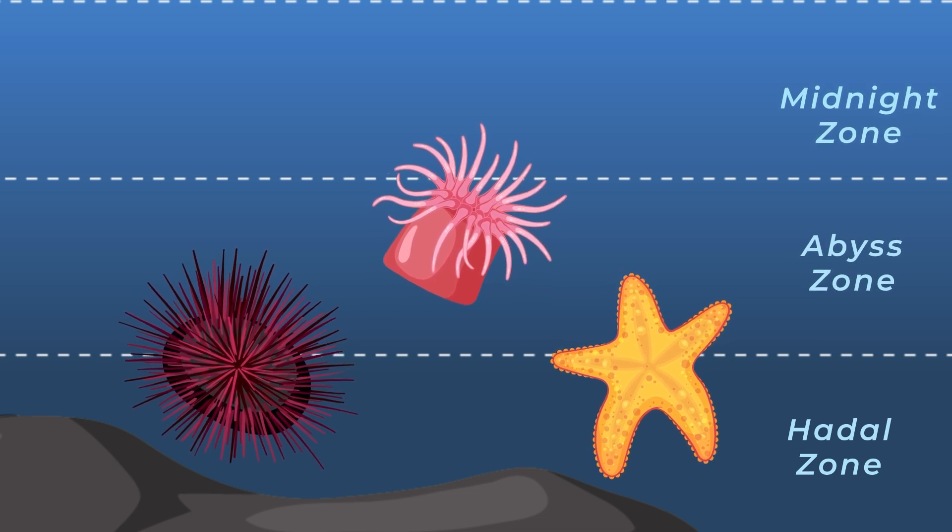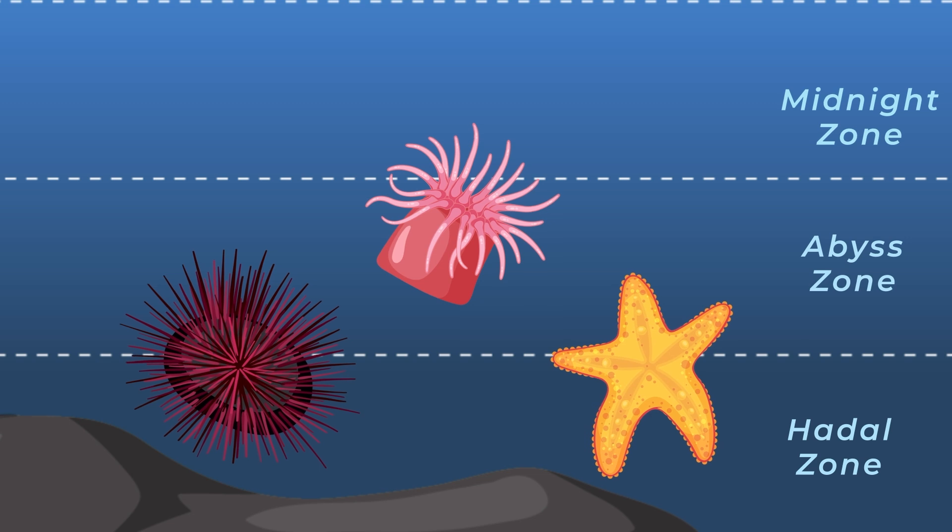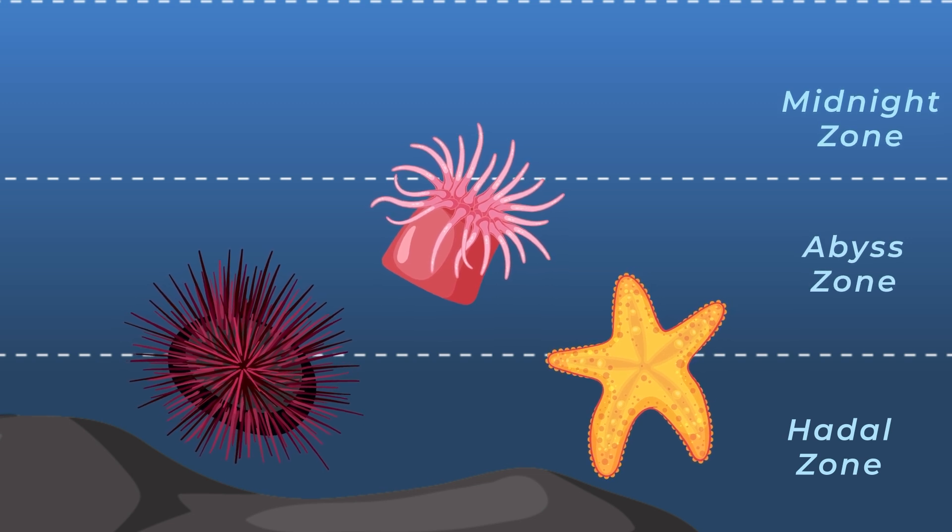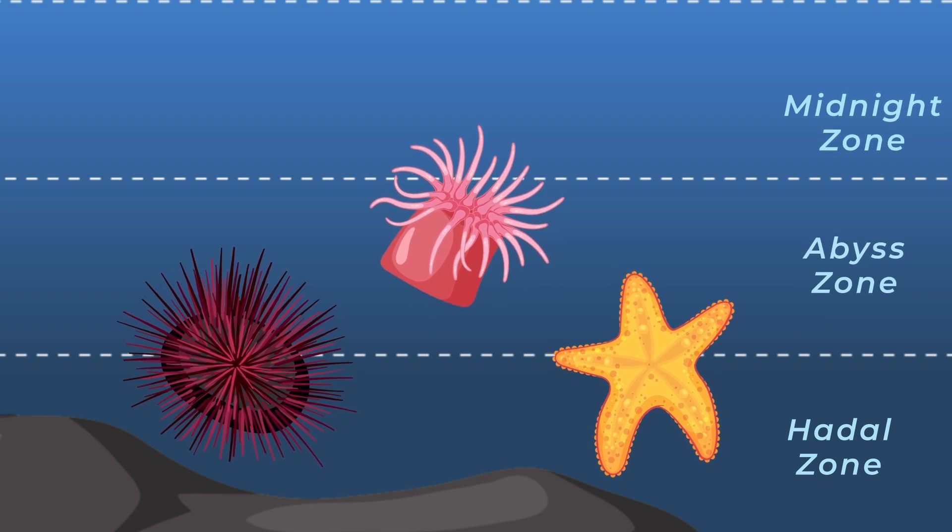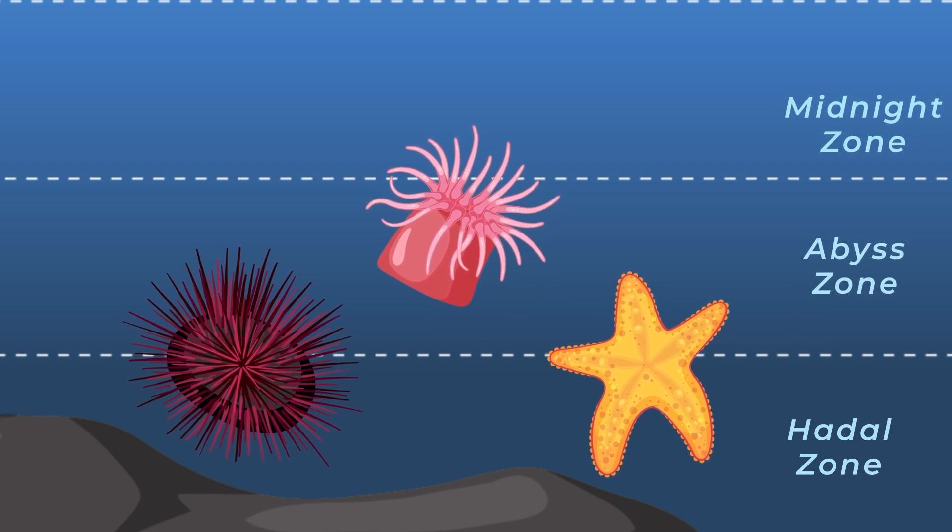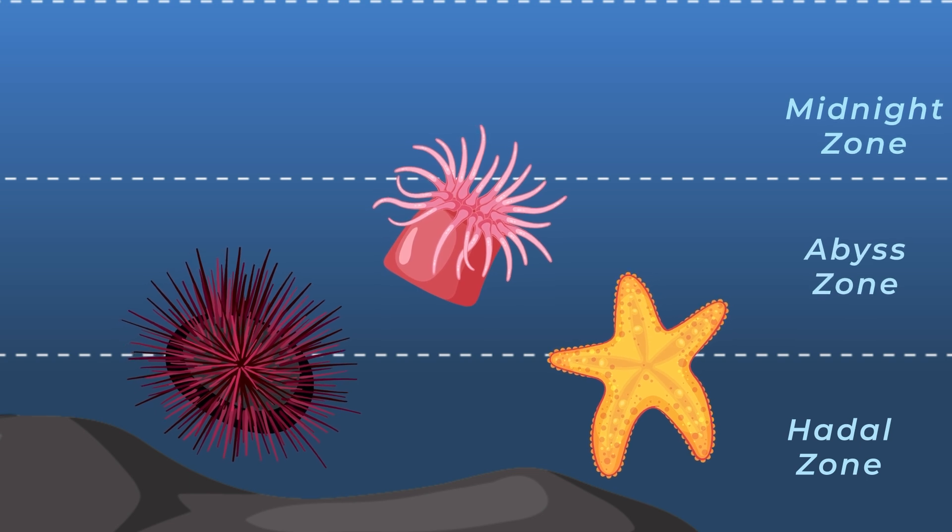But how do they do it? Many deep-sea animals have special adaptations that help them survive. Some have soft bodies that can handle the pressure, while others like certain fish have big eyes or can glow in the dark to find food. It's like having a built-in flashlight!